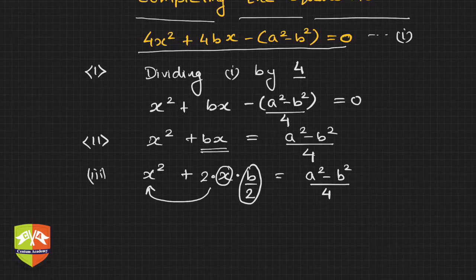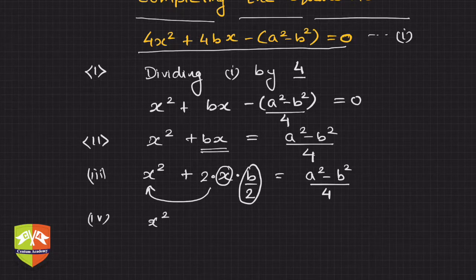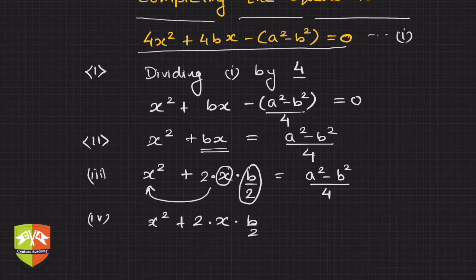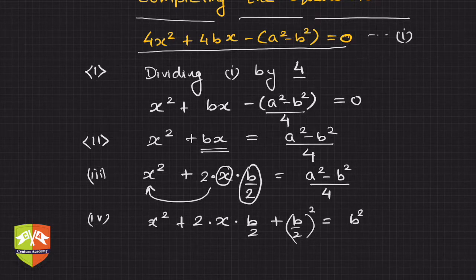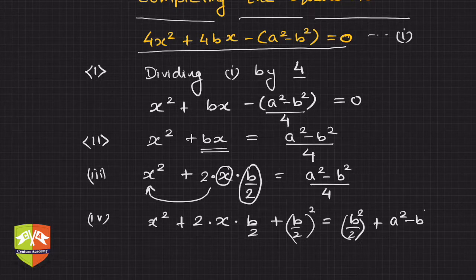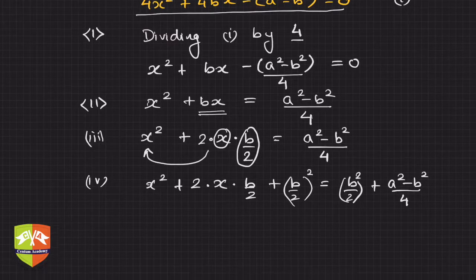The fourth step: we write x² + 2·x·(b/2) + (b/2)², adding the square term to complete the square on the left-hand side. But since we're adding (b/2)² to the left, we must also add it to the right-hand side.